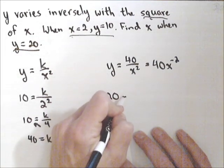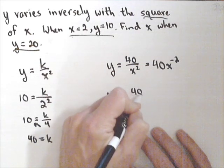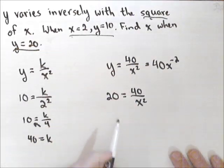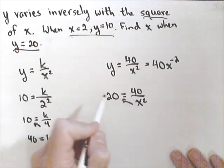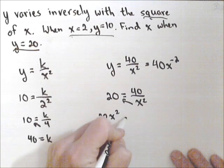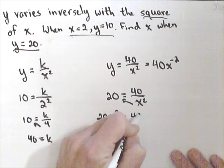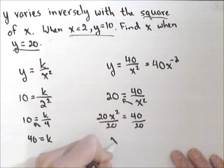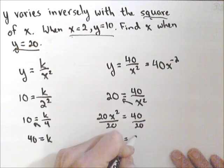So we have 20 equals 40 over x squared. So what I'm gonna do is cross multiply the x squared, so I get 20x squared equals 40. Divide both sides by 20.